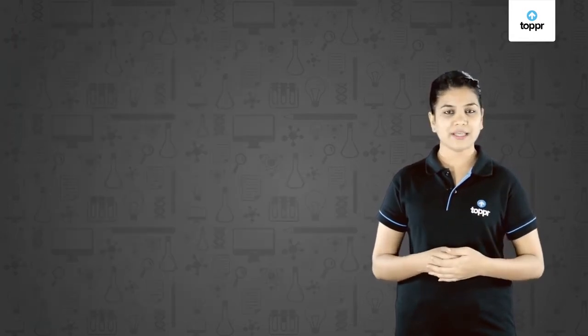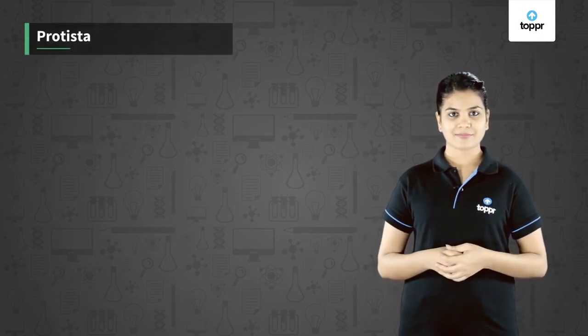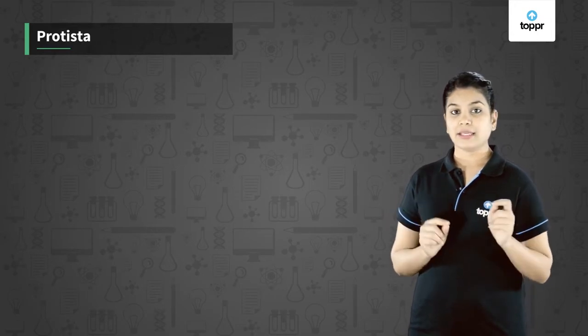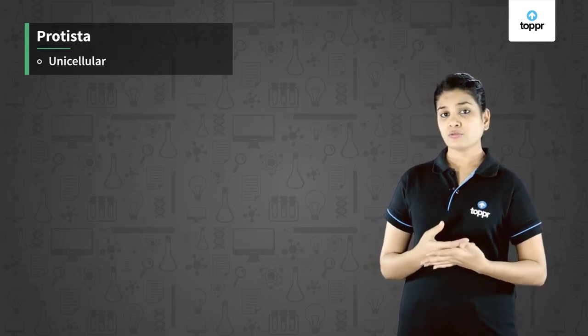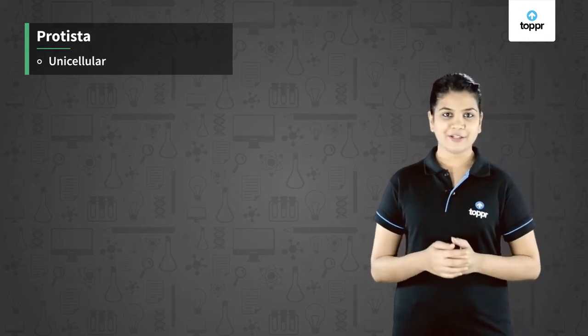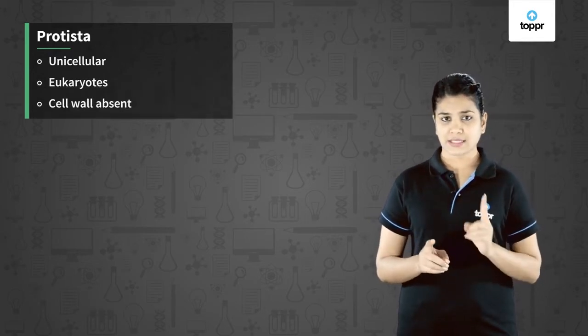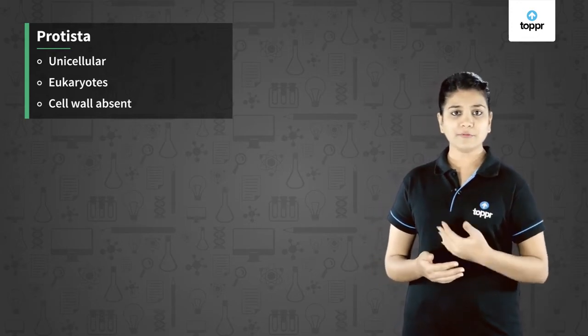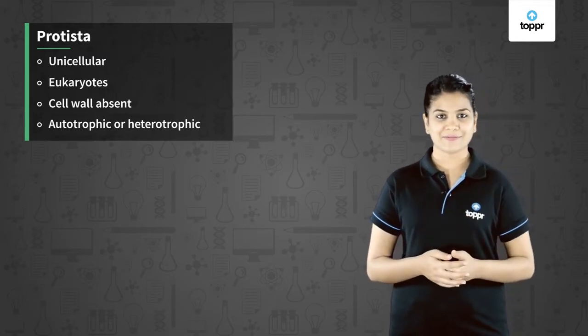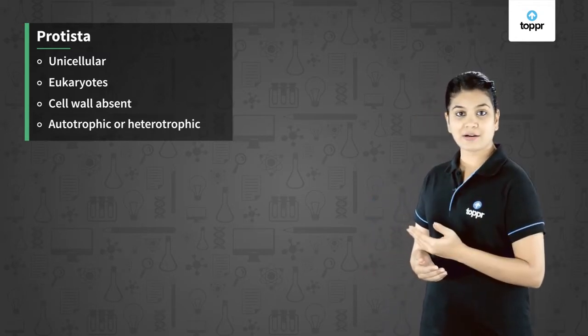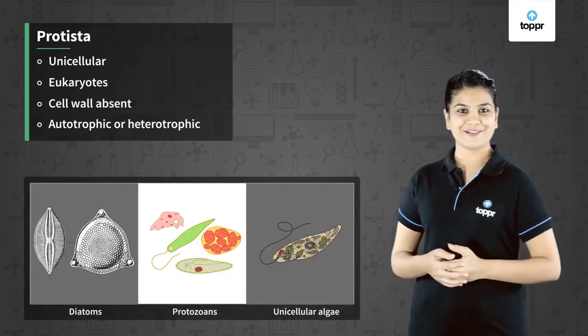The next kingdom is Protista. This group consists of majorly unicellular organisms. These cells have a very defined nucleus and hence they are called eukaryotes. Their cells do not possess a cell wall and their mode of nutrition can be autotrophic or heterotrophic. Some examples of Protista are diatoms, protozoans and unicellular algae.